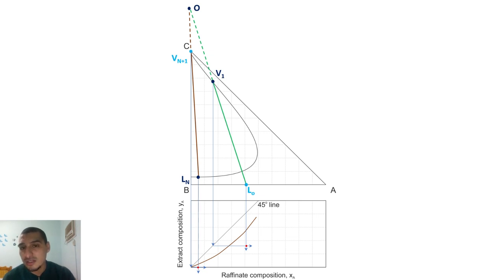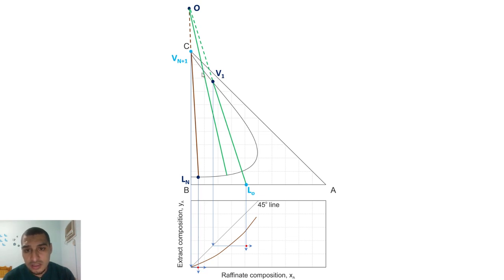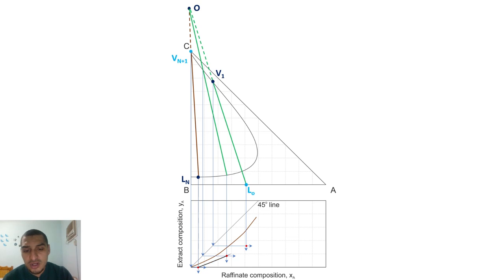You can add more points to the operating line to make it more accurate. You do not need to know exactly whether an intermediate point represents a real operating line — you just draw any random line through point O that lies between the two terminal operating lines, find where it cuts the diagram to get an X and Y, and that gives you one more point on the operating line. Adding more points gives a more accurate line, but using three points is sufficient to keep it simple.